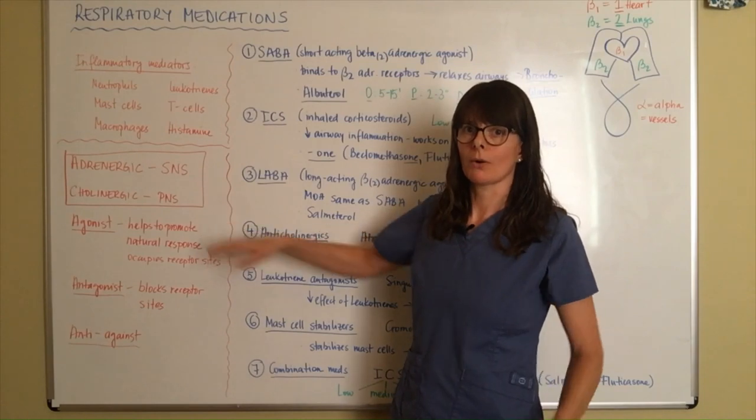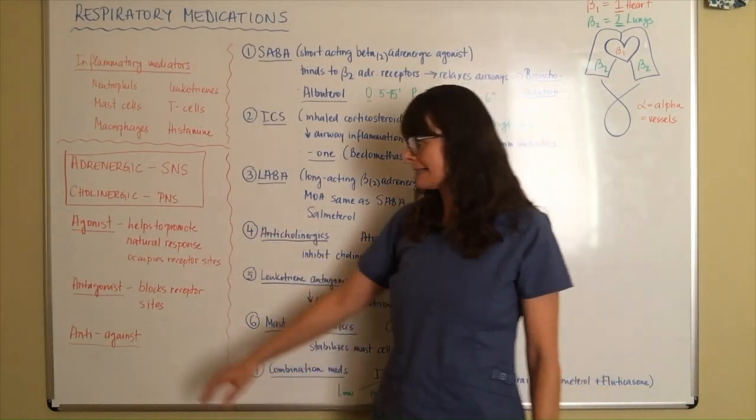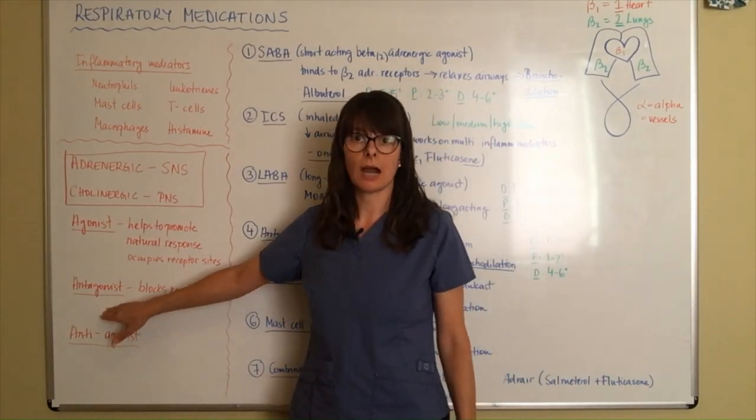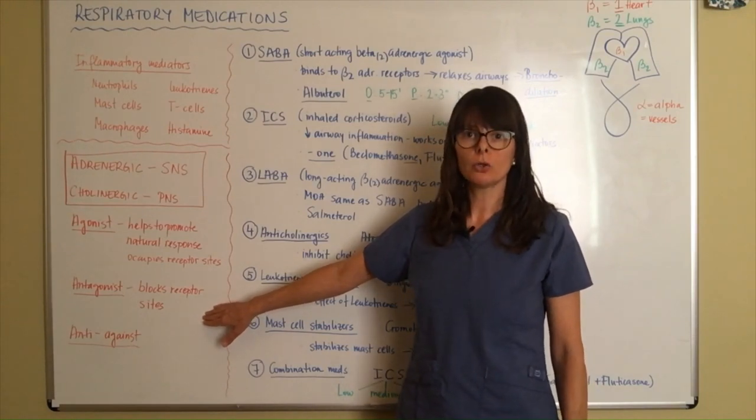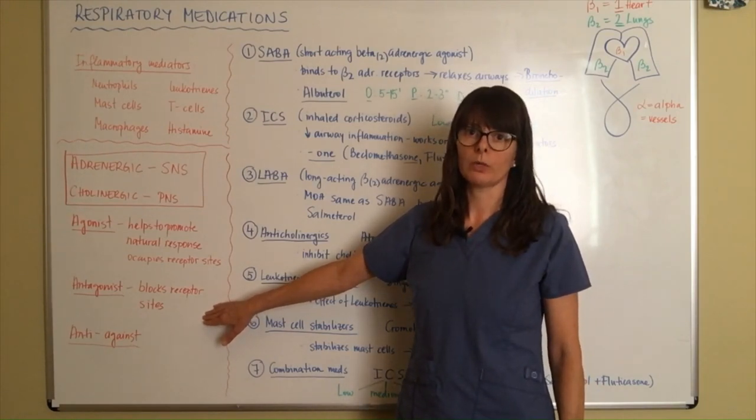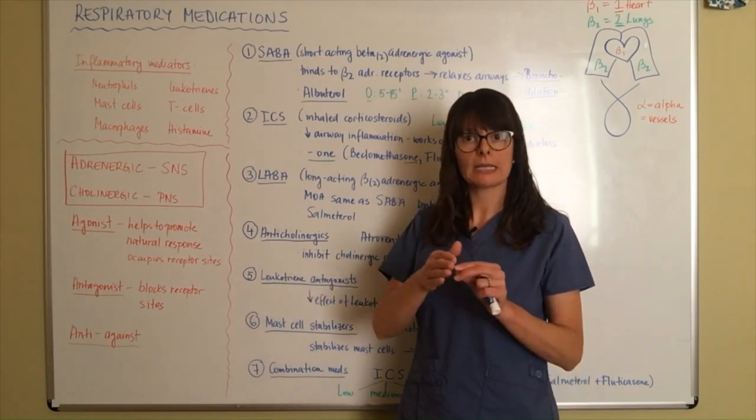An antagonist, as you can imagine, does exactly the opposite—it blocks the receptor sites. When we don't want something to happen, when we want to inhibit certain things from happening, we give an antagonist to block that key-and-lock match.